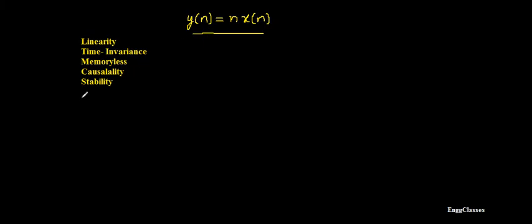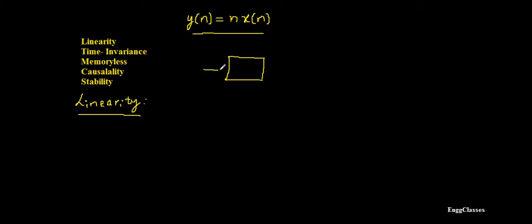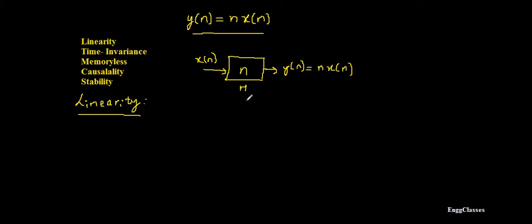We start with the first property: linearity. To understand how the system behaves, let the input be x(n) and the operator of the system be h, so the output y(n) = n·x(n). Whatever input we feed in, the system multiplies it with n and gives us y(n) = n·x(n). That is the nature of the system.